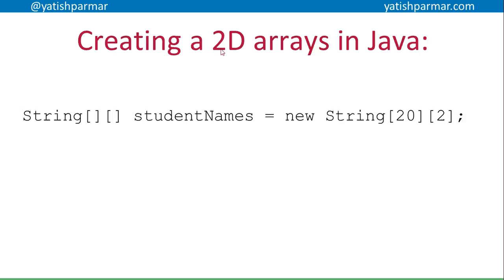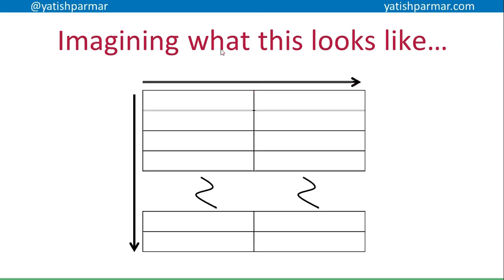To create a 2D array I'll do something like this: `String[][] studentNames = new String[20][2]` — you can see the double brackets. There I'm giving the dimensions: the rows and the columns is one way of visualizing it. So basically what we're creating is something that looks like a grid.